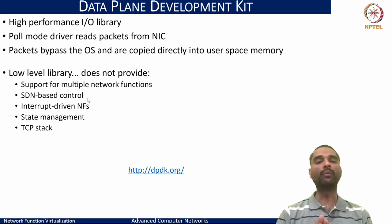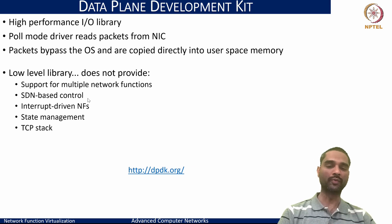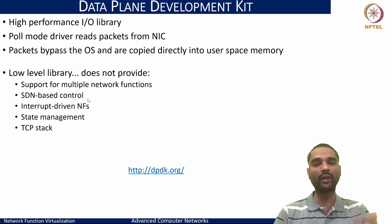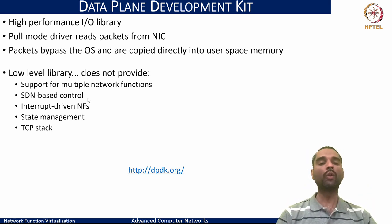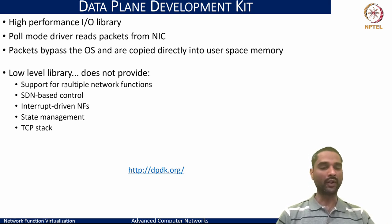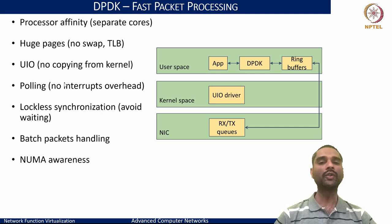What DPDK really provides is ensuring the lowest possible latency from when a packet arrives on the NIC to when it is available for processing in user space, and ensuring that whenever a process wants to send a packet it can be immediately sent out on the NIC without incurring any of these overheads. This is why DPDK became heavily popular and was used in many network function frameworks.